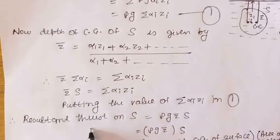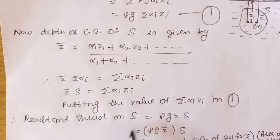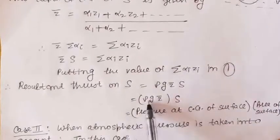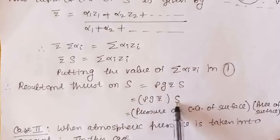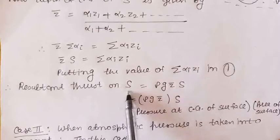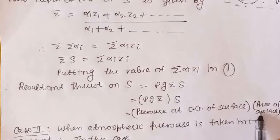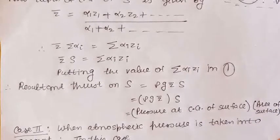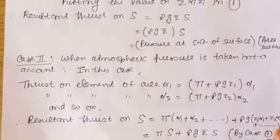The resultant thrust on the plane surface S is given by rho into g into Z-bar into S. Here, rho into g into Z-bar is the pressure at the center of gravity of the surface, and S is the area of the given plane surface. Thus we have proved that the resultant thrust on the plane surface is given by the product of the pressure at the center of gravity and the area of the surface. This was the case when the atmospheric pressure was neglected. Now let us consider the second case when the atmospheric pressure is taken into account.